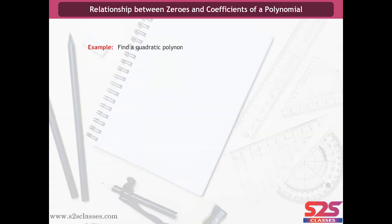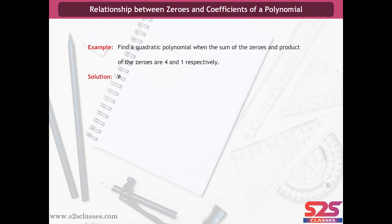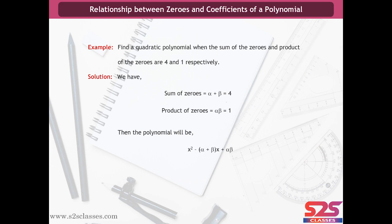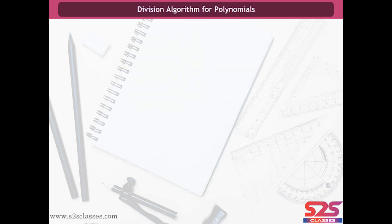Example 2: Find a quadratic polynomial when the sum of the zeros and product of the zeros are 4 and 1 respectively. Solution: We have α + β = 4 and α·β = 1. Then the polynomial is x² - (α + β)x + αβ = x² - 4x + 1. Hence the required quadratic polynomial is x² - 4x + 1.